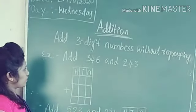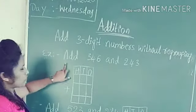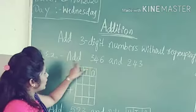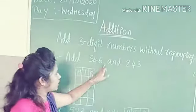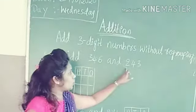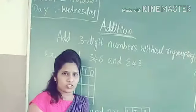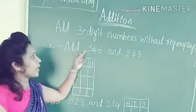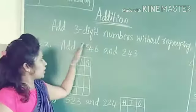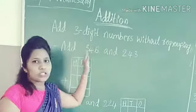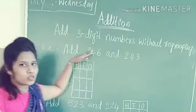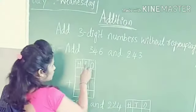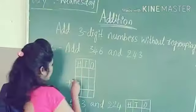Let's see the examples. The first example is: add 246 and 243. Before adding the numbers, first we need to arrange these numbers vertically. So here I arrange the numbers vertically.